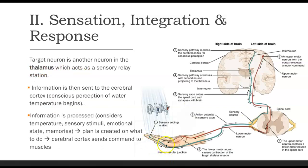So we've talked about the physiological processes taking place through the sensory nerve. We synapsed with an interneuron that took the signal to our thalamus, which serves as a sensory relay station. Information is then sent to the cerebral cortex to give us conscious perception of the water temperature. This information is processed — we think about the sensory stimuli, whether it fits our emotional state and memories, maybe that warm water makes us feel happy. Then we come up with a plan. In our cerebral cortex, we send a command to our muscles, and we go through our motor nerves to our skeletal muscles.